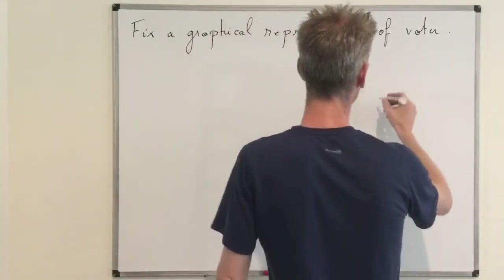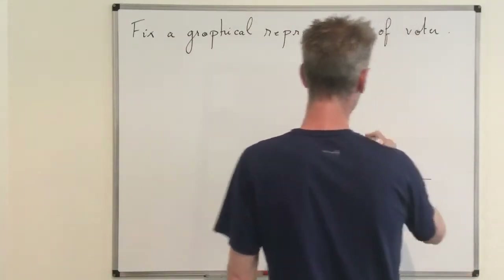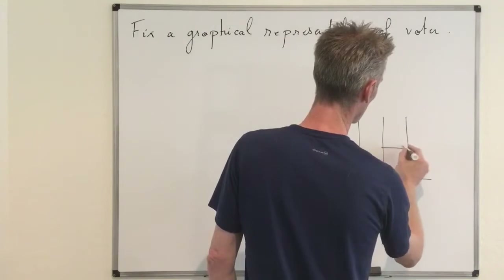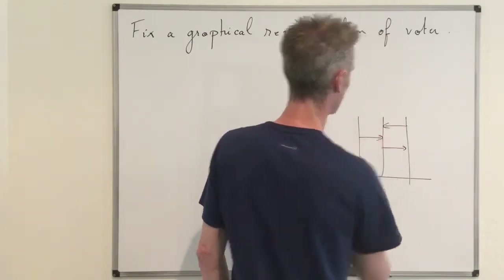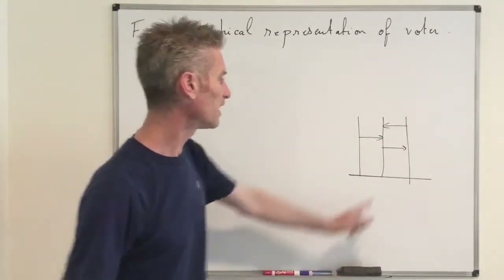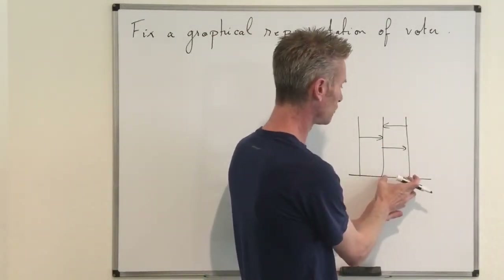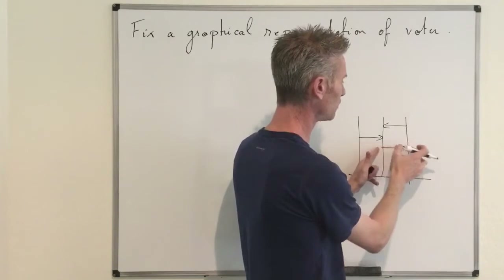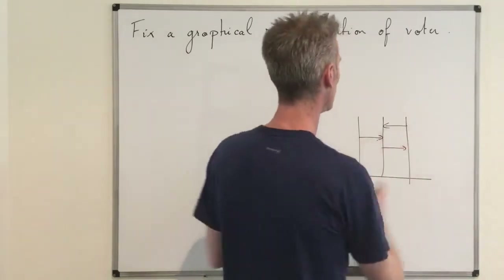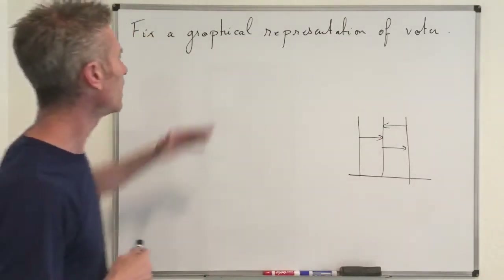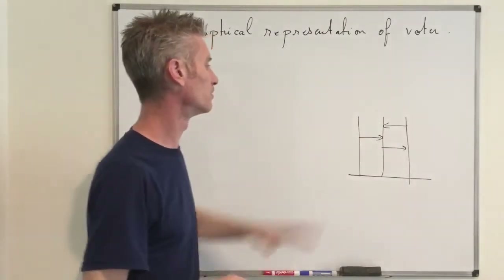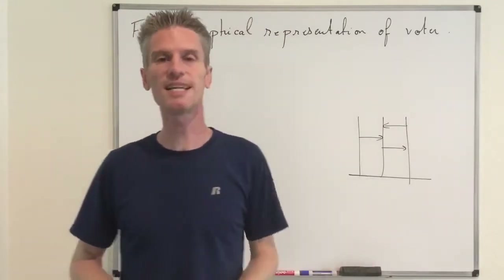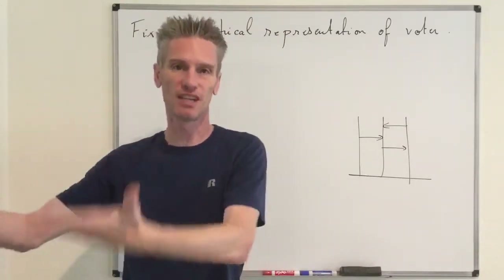So the graphical representation of the voter model looks like this in one dimension: you have those lines, and maybe we have an arrow like this, another arrow like that, and one like this, and so on. The interpretation is that at a given time, one individual gives birth and replaces the individual at the target site. That's how we can construct the process graphically. Now that we have this graphical representation, exactly like we did for the contact process, we can define the dual process and duality relationship. The first step is to define the notion of path.